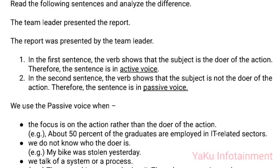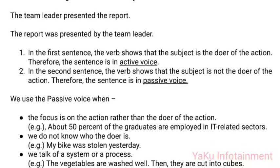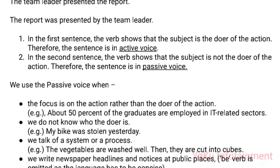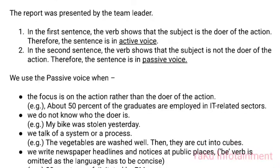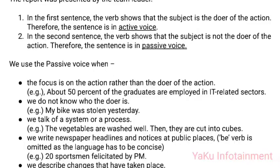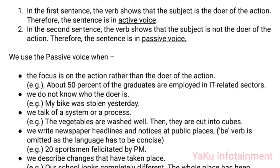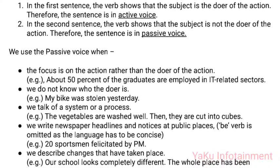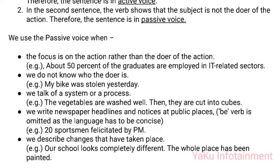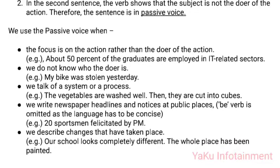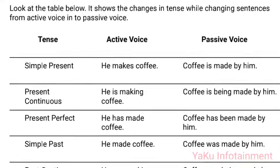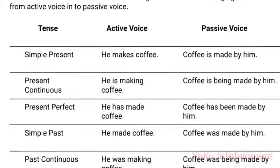We use passive voice when: (1) The focus is on the action rather than the doer — example: 'About 50% of the graduates are employed in IT-related sectors.' (2) We do not know who the doer is — example: 'My bike was stolen yesterday.' (3) We talk of a system or process — example: 'The vegetables are washed well. Then they are cut into cubes.' (4) We write newspaper headlines and notices — example: '20 sportsmen felicitated by PM' (verb is omitted for conciseness). (5) We describe changes that have taken place — example: 'Our school looks completely different. The whole place has been painted.' The following table shows changes in tense while changing sentences from active voice into passive voice.